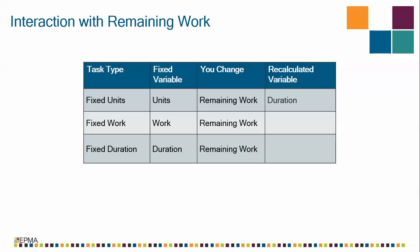On a fixed work task, the work is locked. But if you change the remaining work, you're actually changing the work. So on a fixed work task, if you change the remaining work, you're changing work — so what number will be recalculated? The answer is duration. Why? It's those programming biases I just talked about.